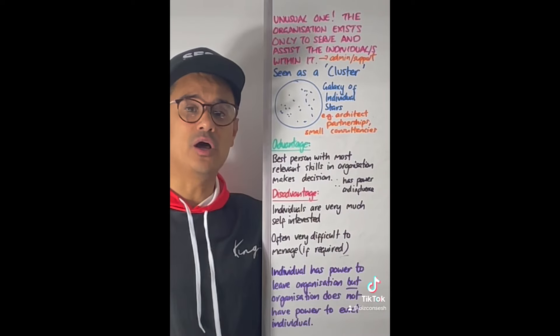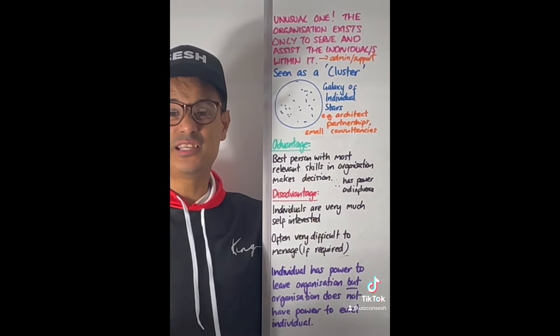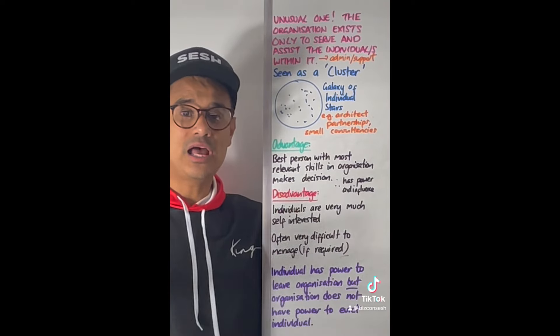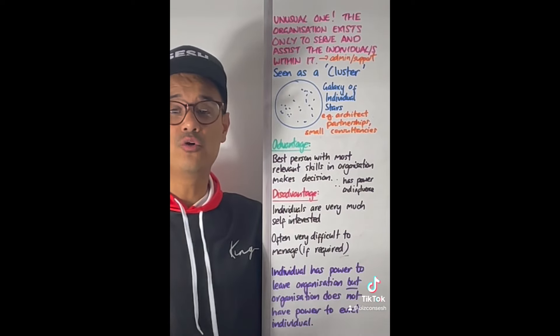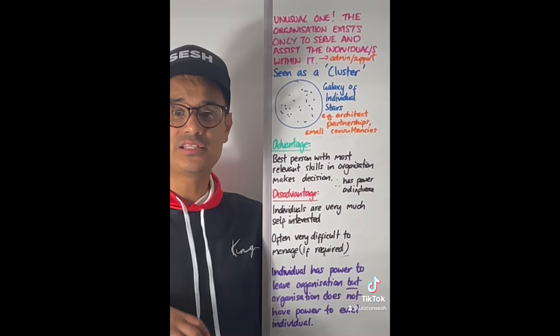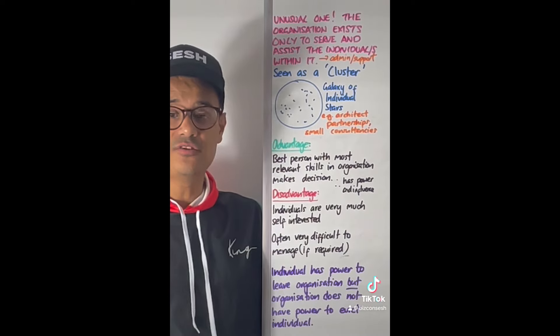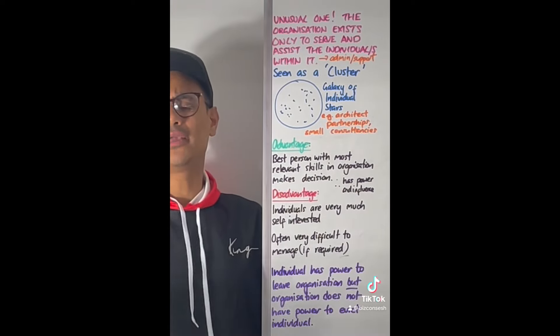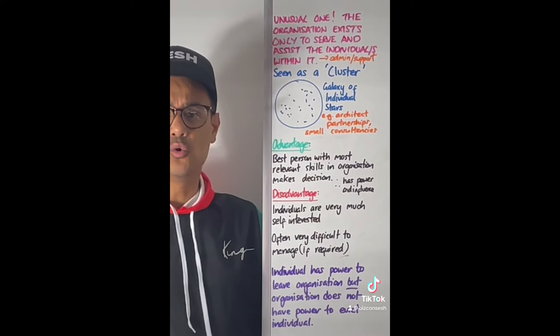Person culture is an unusual one because it's essentially an organisation where the organisation just exists to serve the best interests of the individual or individuals. You might have support staff, admin staff, and they're all there just to serve the individual. It's referred to by Handy as a cluster, loads of dots that are all stars, a galaxy of individual stars. Examples include architect partnerships, law partnerships, small consultancies where there's superstars within those organisations.